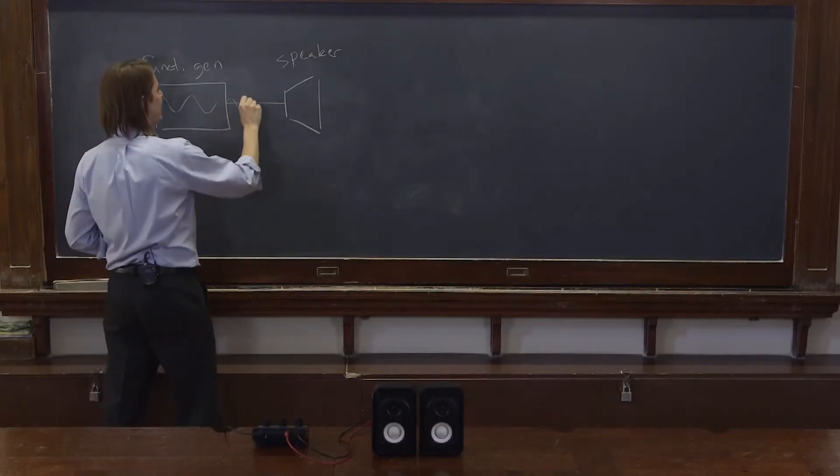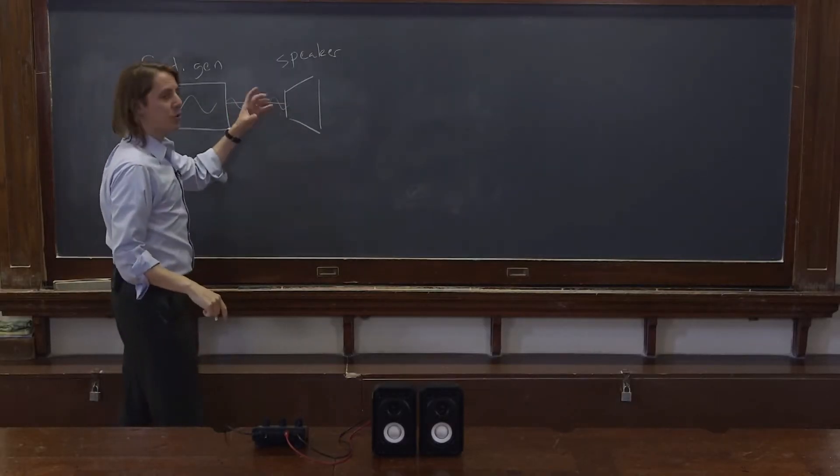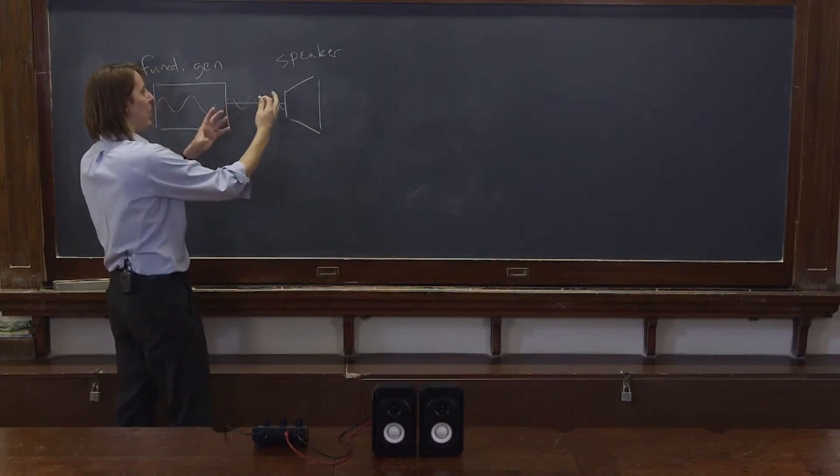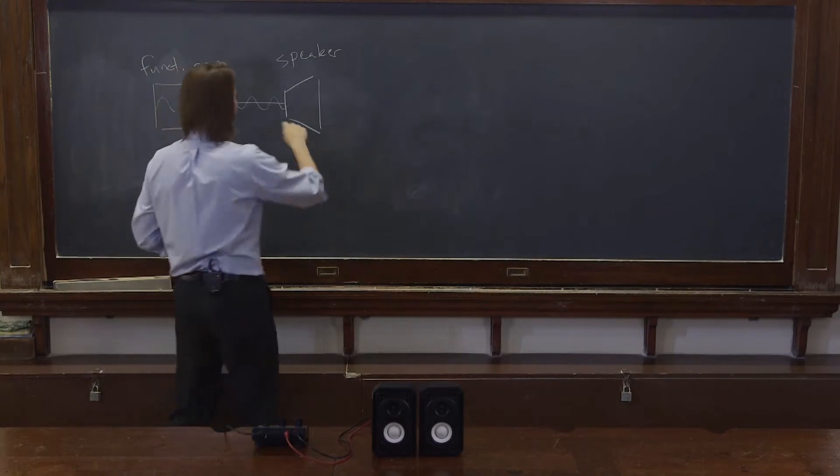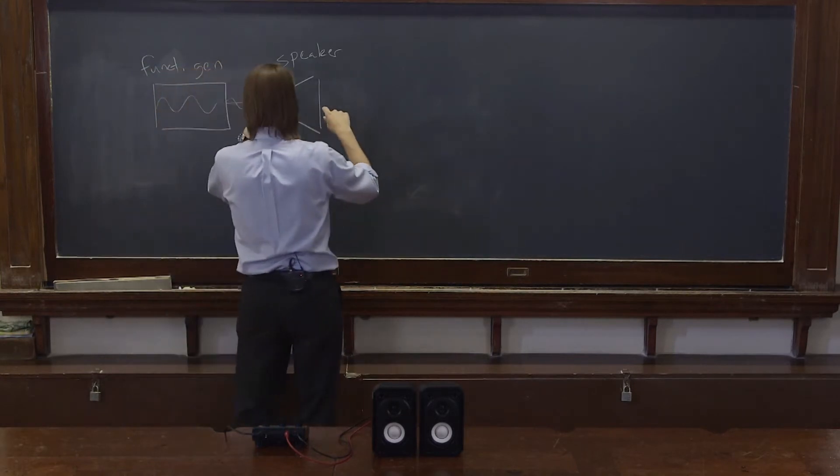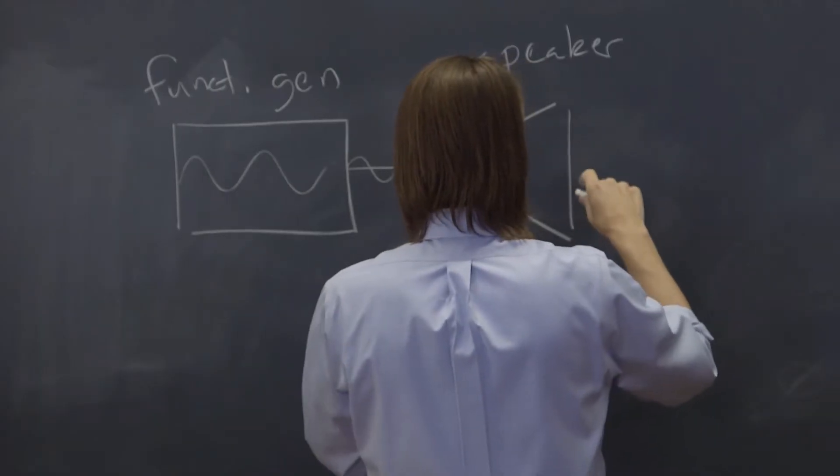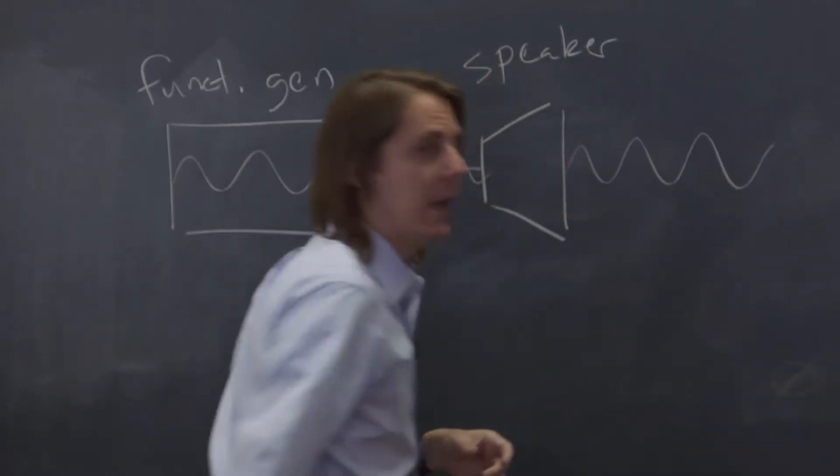The speaker basically takes a sinusoidal voltage, creates a current in a little electromagnet, and there's a permanent magnet nearby on a diaphragm that shakes and basically vibrates the air. So we have an oscillating potential, oscillating current, oscillating magnetic field, and we create oscillating air.